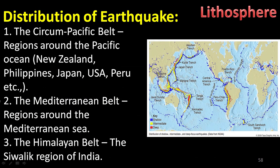Finally, the distribution of earthquakes is classified into three types. The Circum-Pacific Belt covers regions around the Pacific Ocean, including countries like New Zealand, Philippines, Japan, USA, and Peru. The second is the Mediterranean Belt, covering regions around the Mediterranean Sea. The third is the Himalayan Belt, including the Siwalik range of India. On the map, the yellow-colored regions indicate the distribution of earthquake zones.